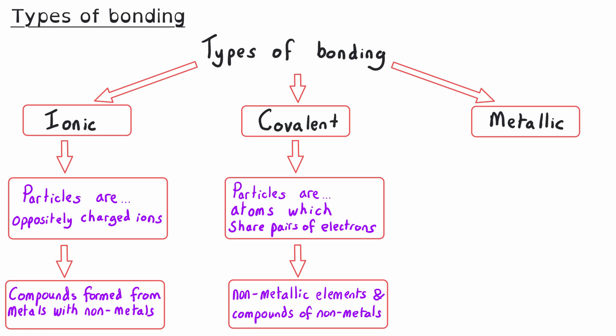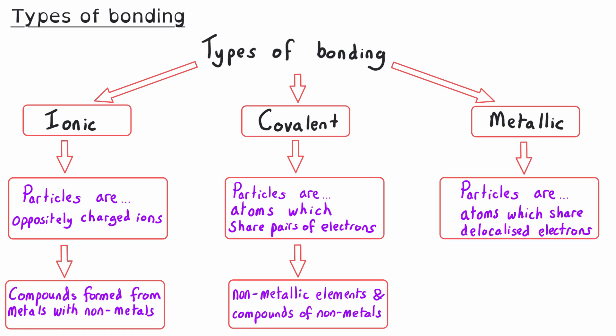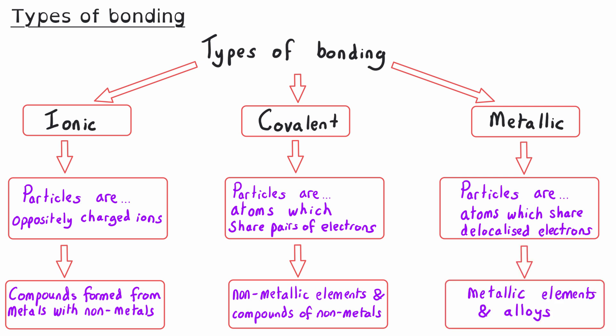In metallic bonding, the particles are atoms which share delocalized electrons, and this type of bonding occurs in metallic elements and in alloys.